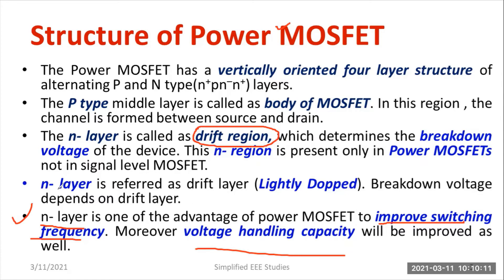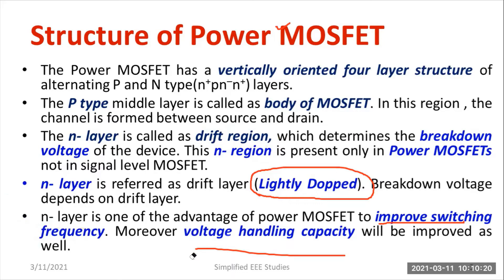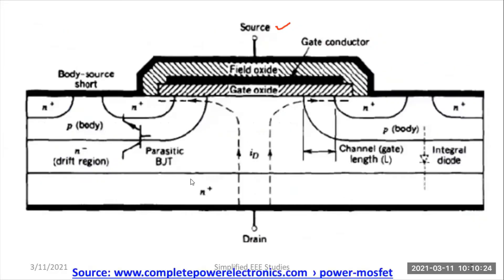The N minus layer is lightly doped. Looking at the diagram, you can observe the N minus layer — it is also called the drift layer. It improves the voltage handling capability and the switching frequency of the device. However, if you increase the N minus layer thickness, the power loss will be increased. Other than that, everything is fine.